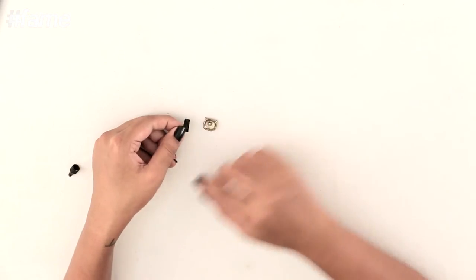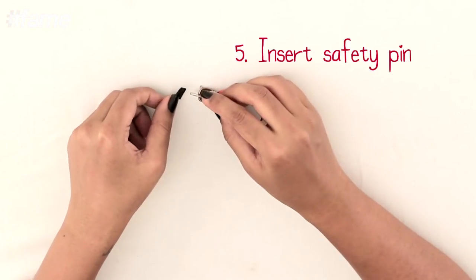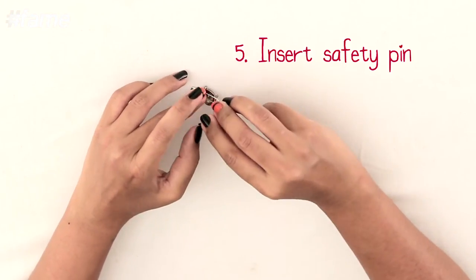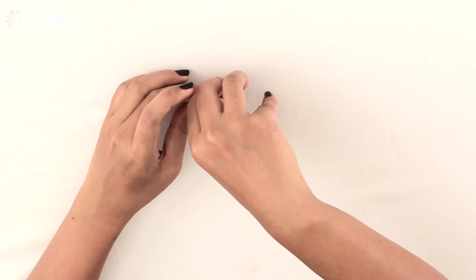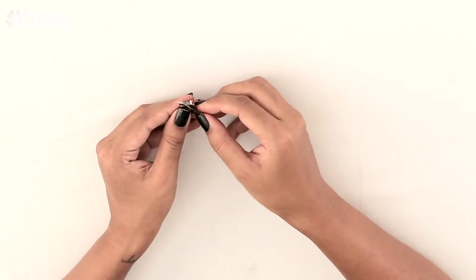Let it dry before fixing the safety pin. Once it's dried, all you have to do is place your safety pin and cover it with this felt paper. You can cut out the extra.